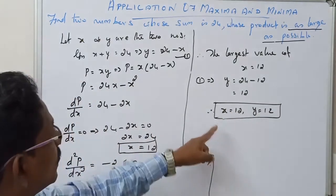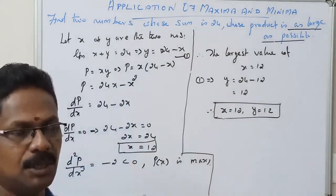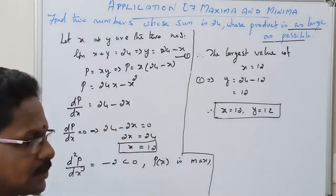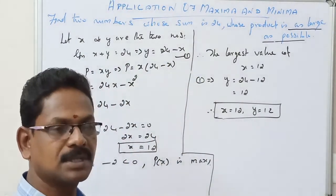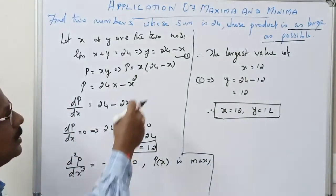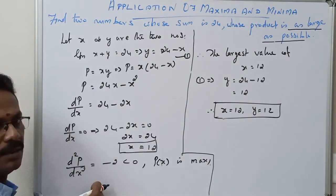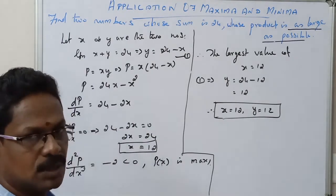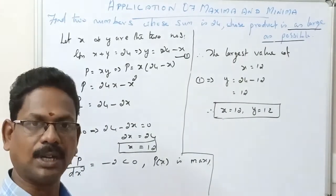So this is the application of maxima and minima. From the given data, we form an algebraic expression — in this case a product — then apply the maximum-minimum condition using the first derivative and second derivative to determine whether the result is a maximum or minimum.